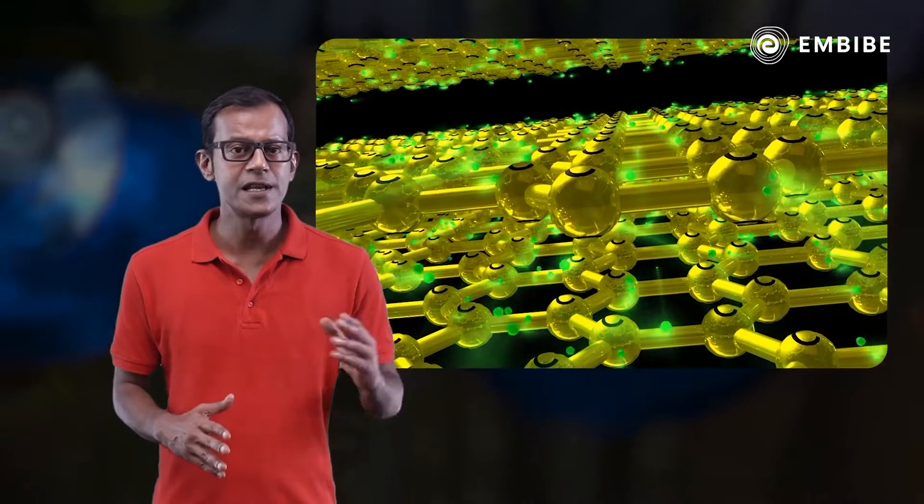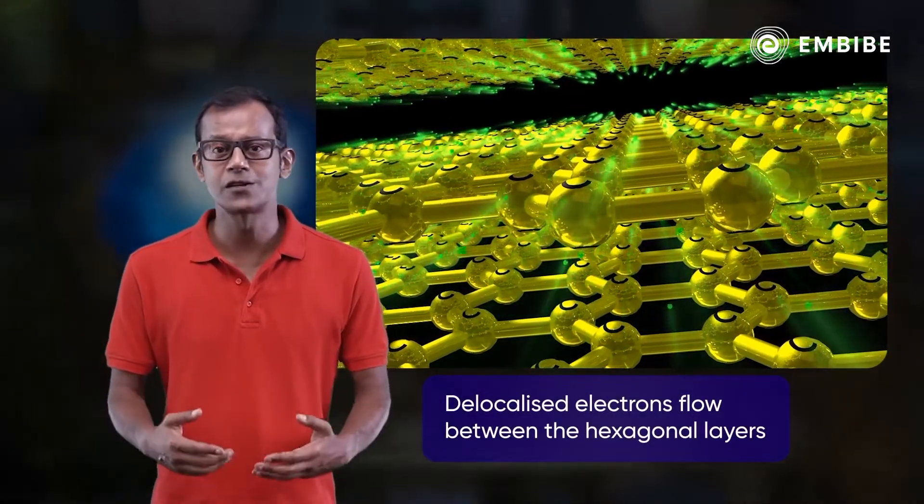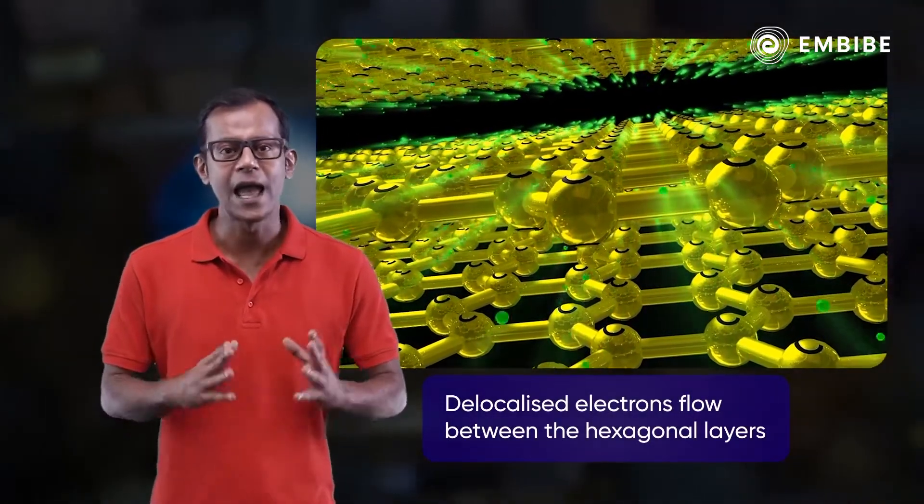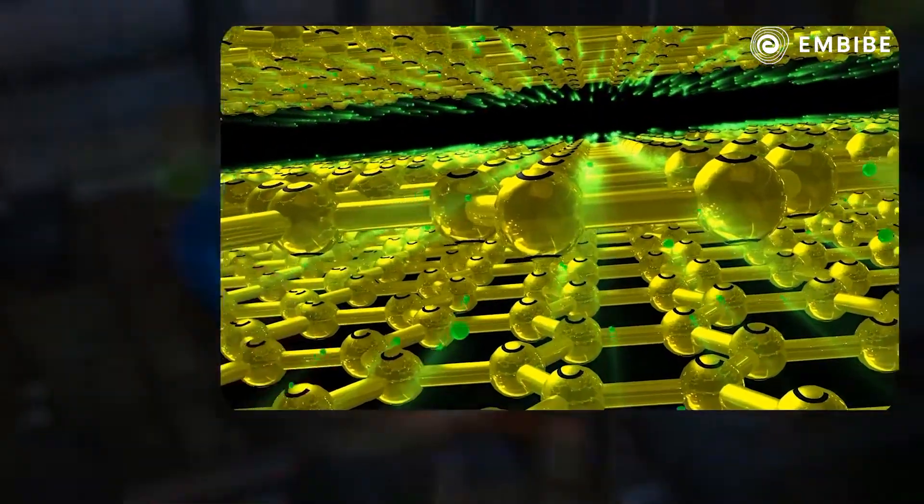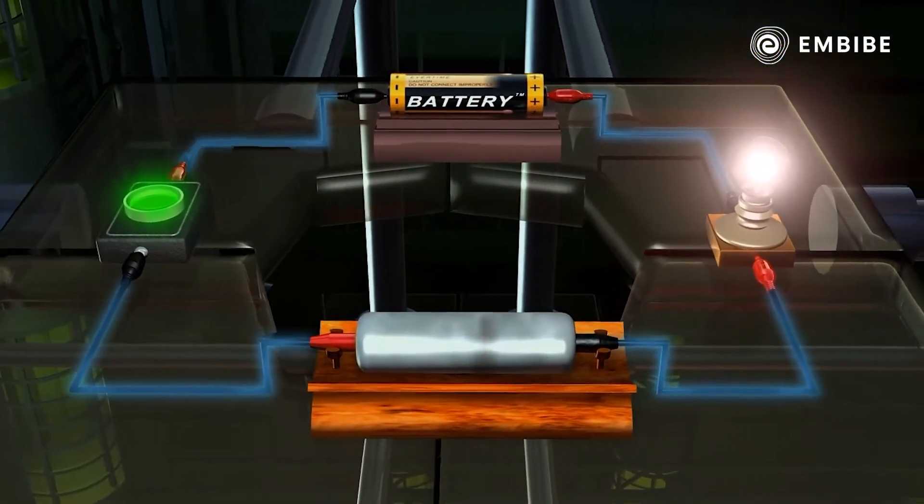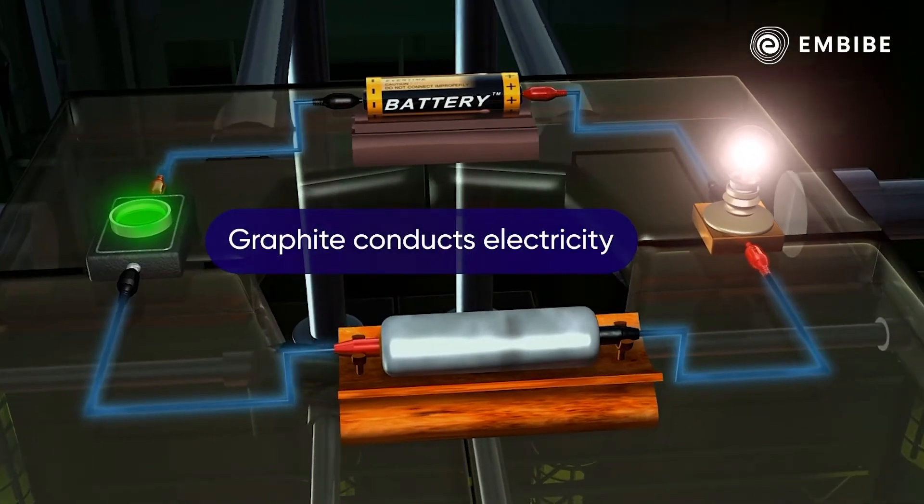When electricity is passed, these delocalized electrons flow between the hexagonal layers and conduct electricity. Thus, graphite conducts electricity.